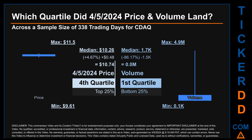Hello, my name is Maria. Which quartile did April 5th, 2024 price and volume land in, across a sample size of 338 trading days? The maximum end-of-day price for CDAQ was $11.50 while the minimum was $9.61. Within that price range, the April 5th, 2024 price of $10.74 landed within the fourth quartile, meaning it was within the top 25% of all sampled end-of-day prices. The day's volume landed within the first quartile — the bottom 25% of all sampled daily volume — which saw a max daily volume of 4.9 million and a minimum of 100.